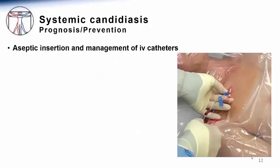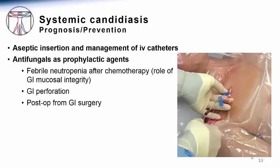Lastly, what measures can we take to prevent systemic candidiasis? First, much attention has been focused on adherence to rigorous aseptic techniques when inserting IV catheters to prevent catheter-associated infections, from staph infections to Candida infections. Antifungal agents can also be used as prophylactic or preventive agents in high-risk patients. These drugs have been rigorously tested in patients receiving cancer chemotherapy or stem cell transplantation, especially those with active neutropenia or graft-versus-host disease. Antifungal agents have also been used when the gut is compromised, such as after GI perforation due to appendicitis or diverticulitis, or after complicated GI surgery.